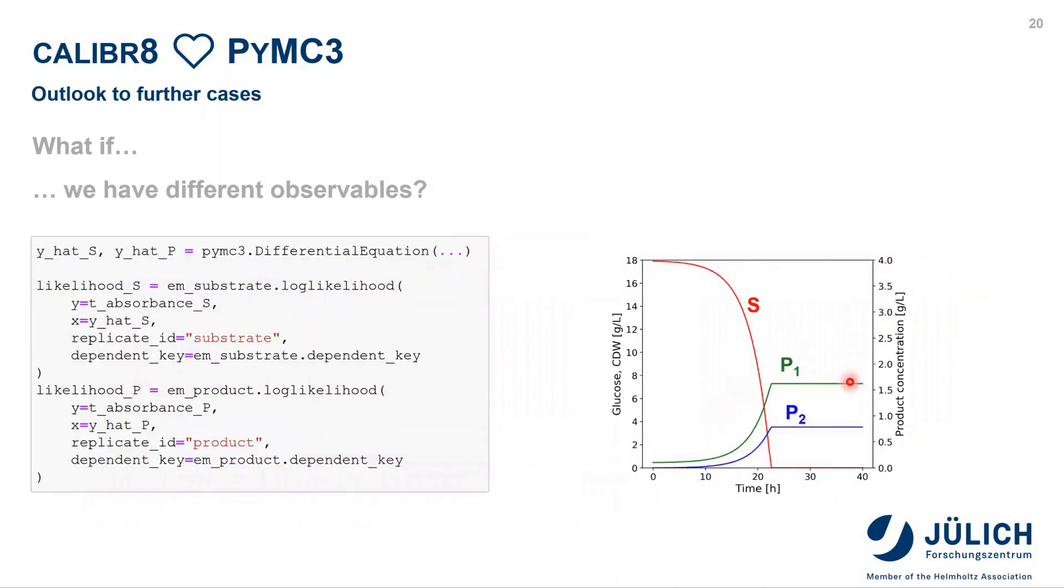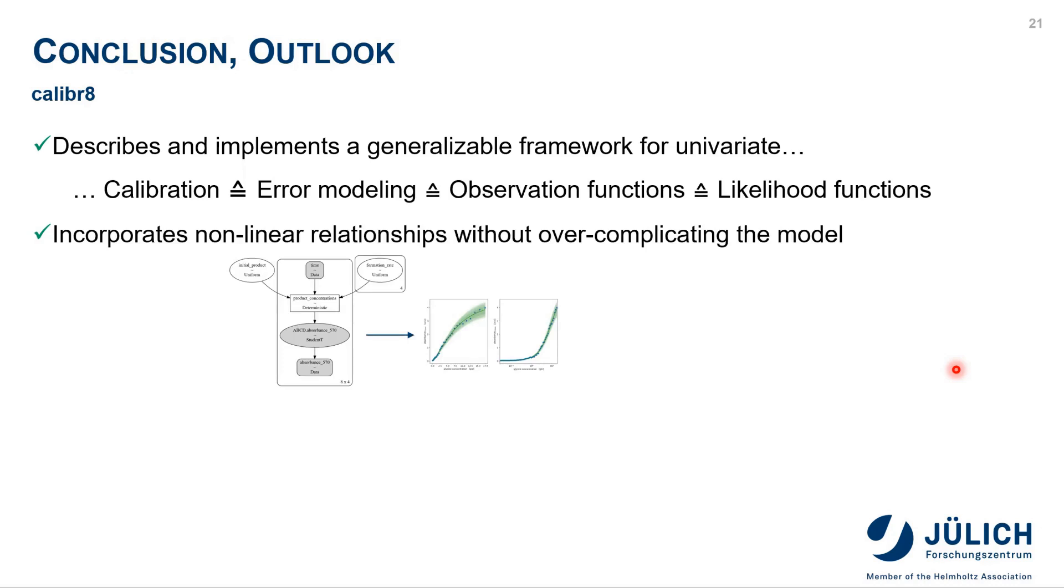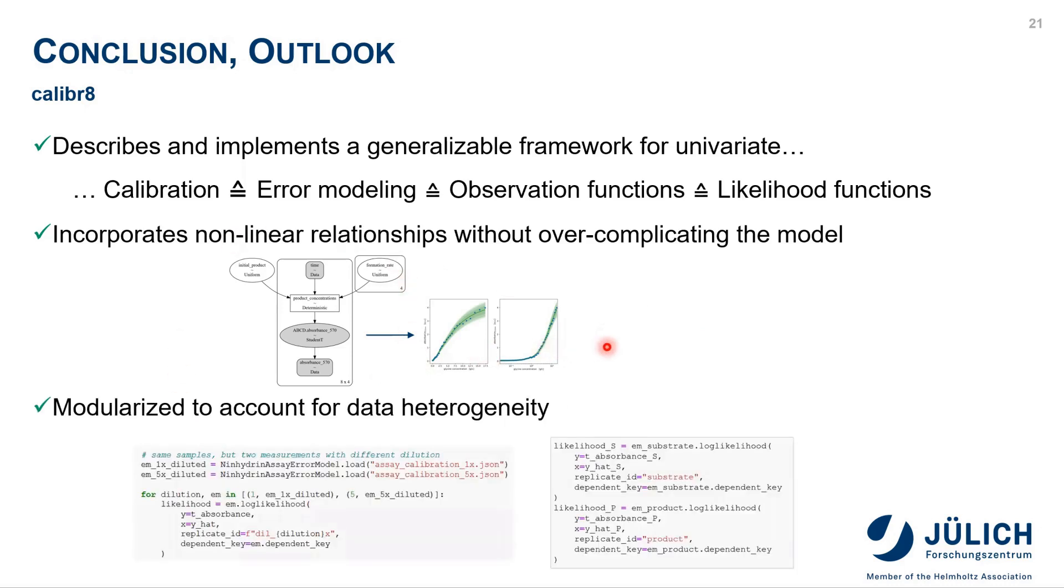Going even beyond this, maybe we don't just observe one product, but several and maybe also the substrate. What would we need in this case? First of all, we need predictions for our observables. There we need another model, which could be a differential equation, for example. But then we set up again different error models and use the log-likelihood method, and we can put those predictions into our log-likelihood and handle those different predictions at the same time. Here you see that Calibrate is very modular. To sum up this whole talk, we hopefully could show you how Calibrate provides a generalizable framework, and however you call it now, univariate calibration, error modeling, observation functions, or likelihood functions, this is applicable to many different cases. We also showed how you can incorporate nonlinear relationships, and because this is handled externally in the error model, you don't overcomplicate your process model, but you do this in another step. And finally, because this is so modular in the plug-and-play fashion, you can account for various sources of data heterogeneity.